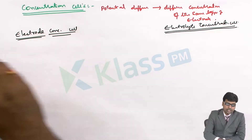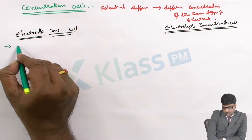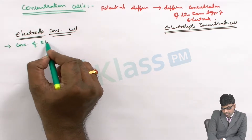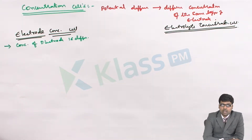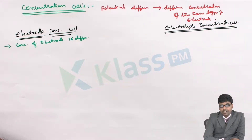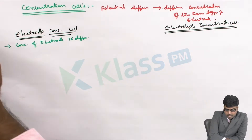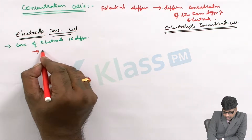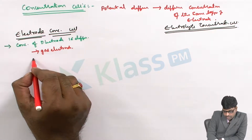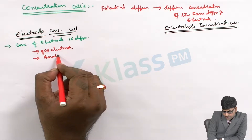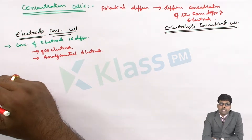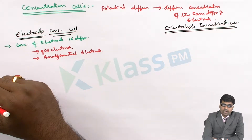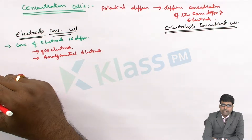In the electrode concentration cell, the concentration of the electrode is different at anode and cathode. This kind of electrode concentration variation is possible for gas electrodes like the hydrogen electrode, or in the case of amalgamated electrodes — where the metal concentration is varied by adding mercury into it.